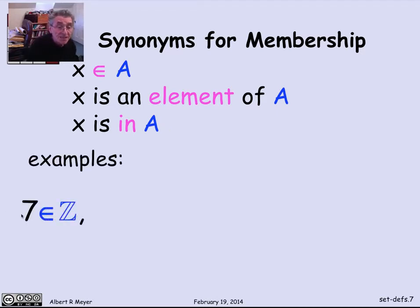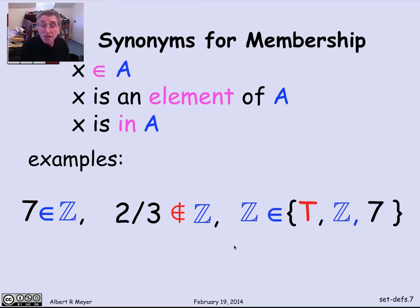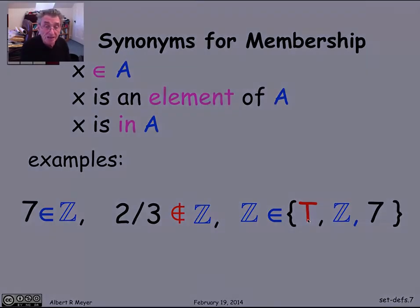So for example, 7 is a member of the integers. Z is our symbol for the integers. 2 thirds is not a member of the integers, because it's a fraction. That's not an integer. And on the other hand, the set Z of integers itself is a member of this three element set consisting of the truth value T, the set of all integers, and the element 7. So here's an example where a set can contain sets, quite big ones even. And that's fine. That's not any problem mathematically.